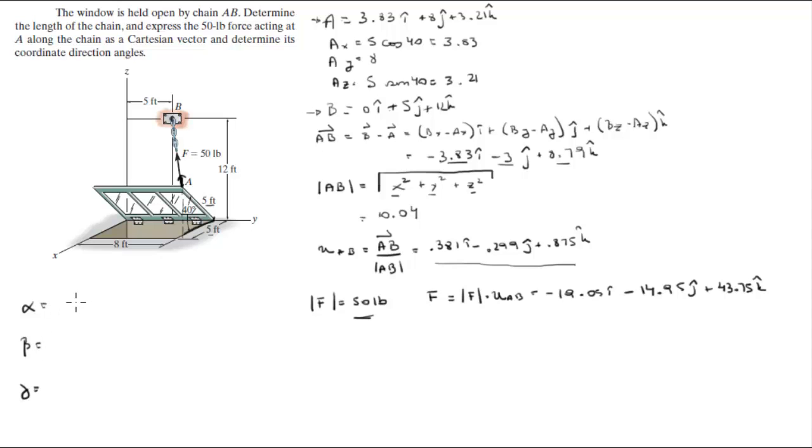And the coordinate direction angles can be found by doing the cosine inverse of the x component over the magnitude, the y component over the magnitude, and the z component over the magnitude. So the cosine inverse of each of these values—don't forget the sign—divided by the magnitude of F right here.